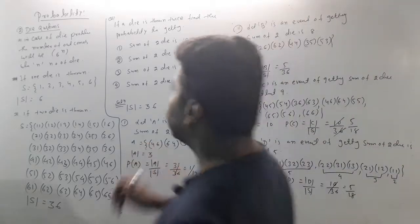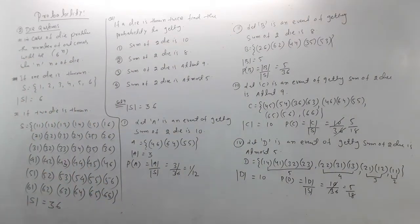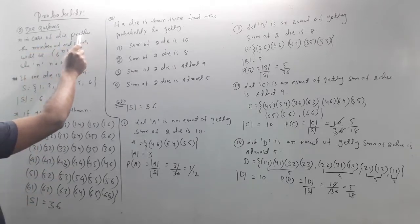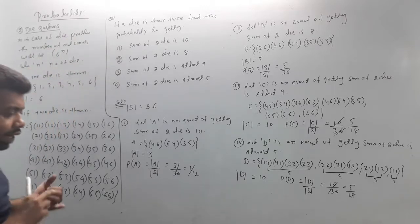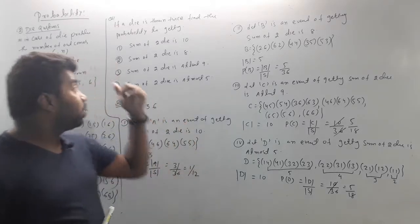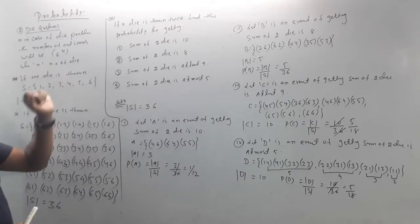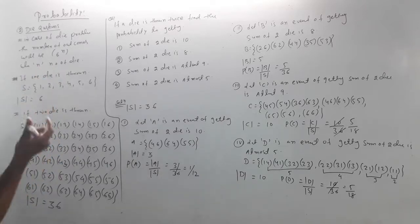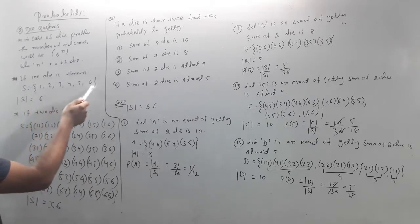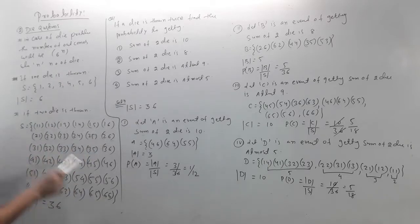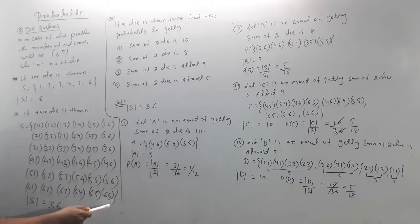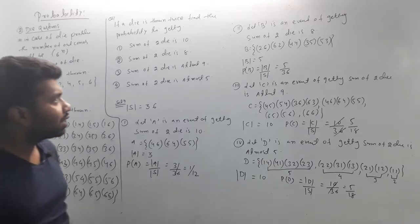Now the die question. In the case of a die problem, the number of outcomes will be 6 to the power n, where n is the number of dice. For a coin problem it is 2 to the power n; for a die problem it is 6 to the power n. When one die is rolled, the outcomes are 1, 2, 3, 4, 5, 6 — total 6. For two dice, the total number of outcomes is 6² = 36.